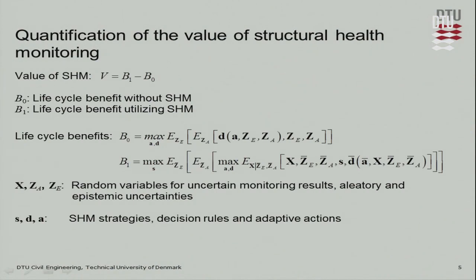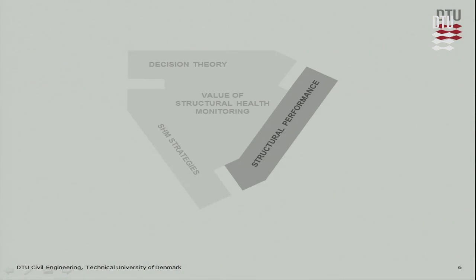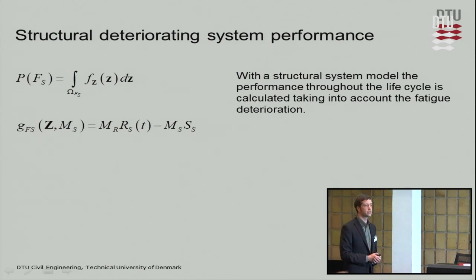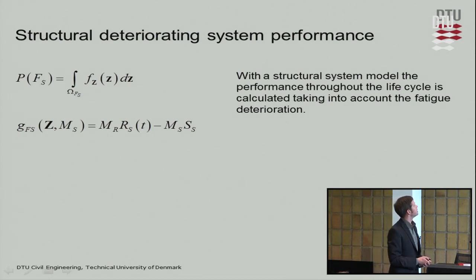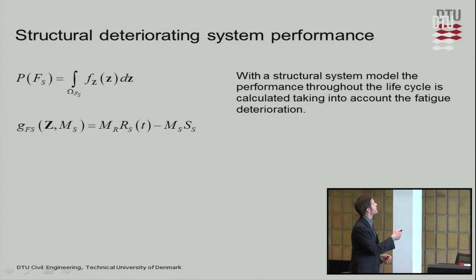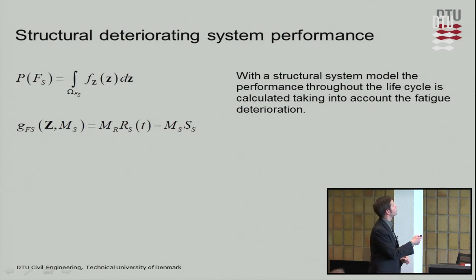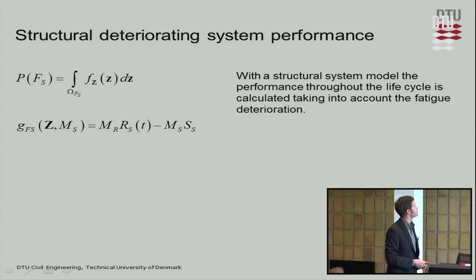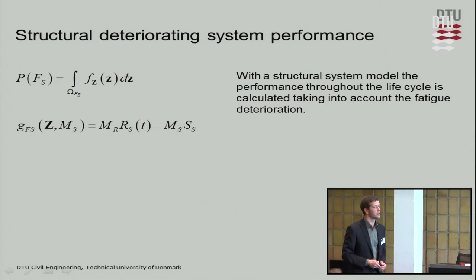Let's come to the structural performance model. We can have a model for system structural performance written in general form. The failure domain is described with a limit state function: model uncertainty MR multiplied by the resistance over time of the system, minus model uncertainty multiplied by the system load. The resistance over time may reduce.